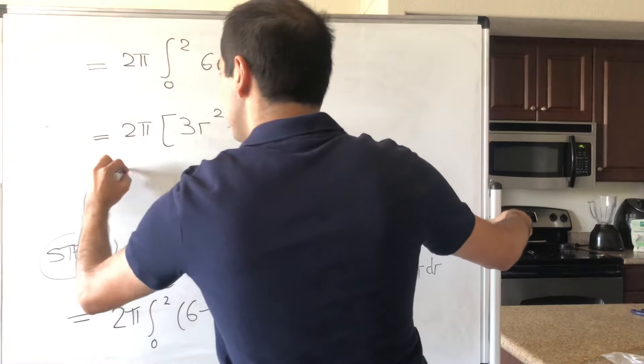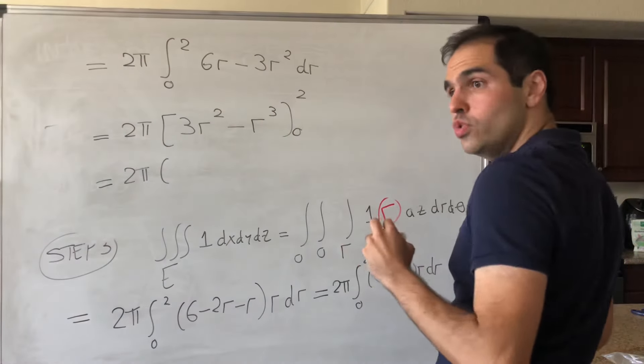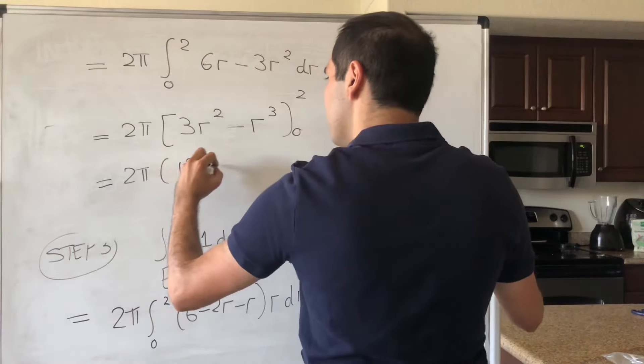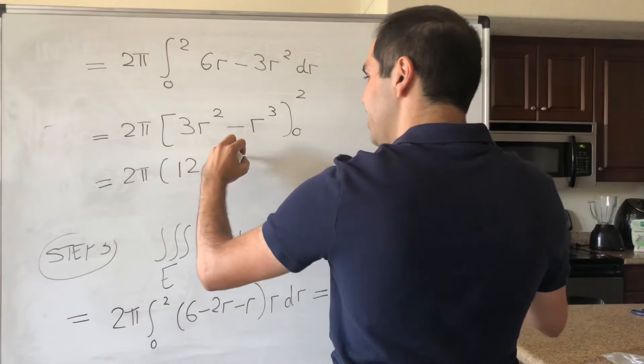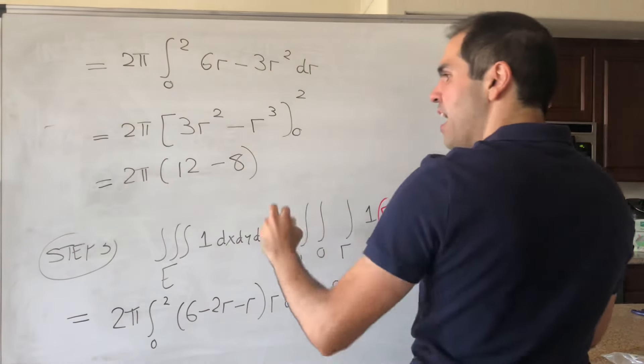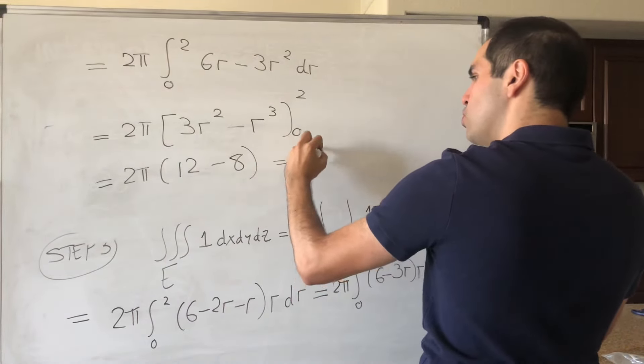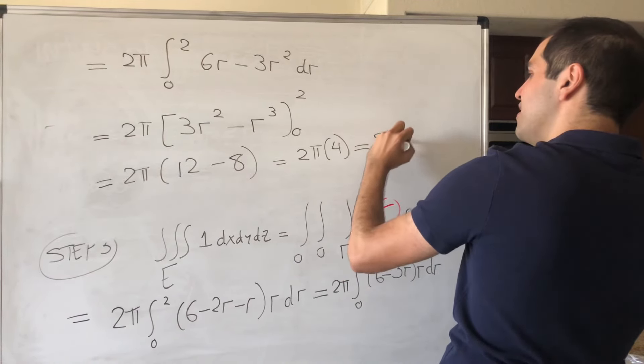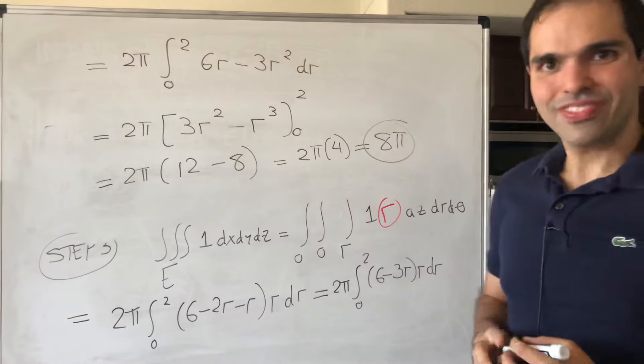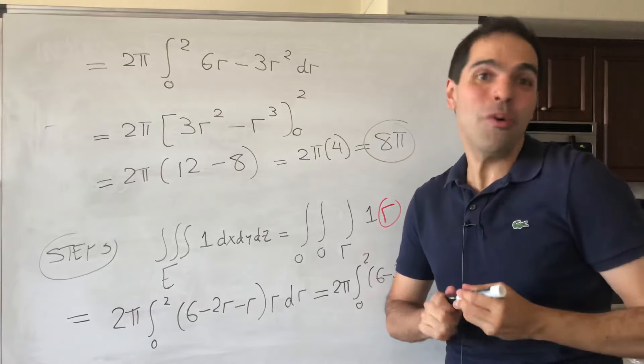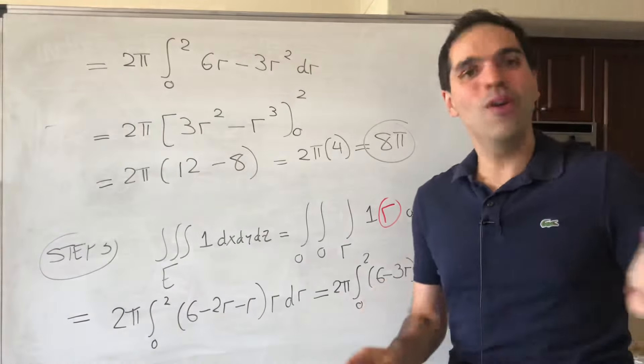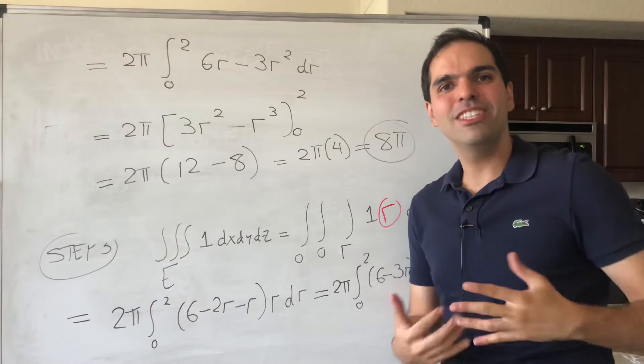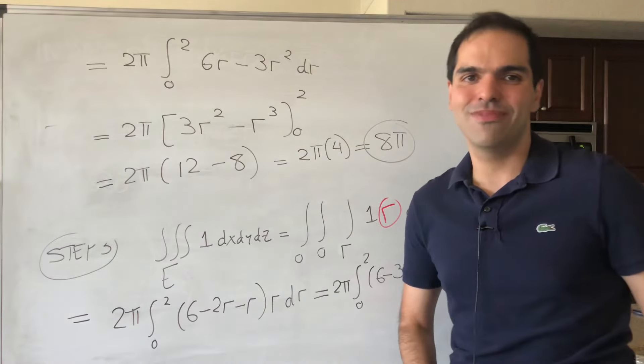And then, this becomes 2 pi. Okay, 3 times 2 squared, I believe that is 12. r cubed, that is 8. So, 2 pi times 12 minus 8. So, 2 pi times 4. And, in the end, we get some delicious 8 pi. And, this is the integral over Sims. All right, I hope you like this. If you want to see more math, please make sure to subscribe to my channel. Thank you very much.